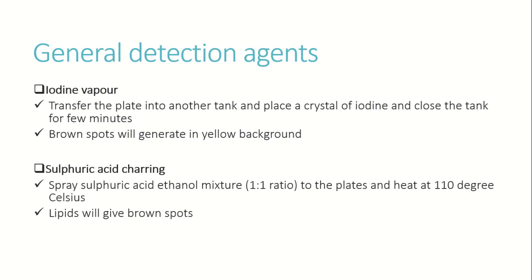General detection agents include iodine vapor — small iodine crystals undergo sublimation. The lipids appear as brown spots. Another general reagent is sulfuric acid, used in a 1:1 ratio. Place the chromatography plate in a dry oven at 100 to 110 degrees Celsius; lipids appear as brown spots. The iodine vapors and sulfuric acid method both reveal brown spots for all lipids.